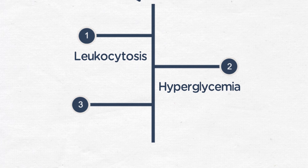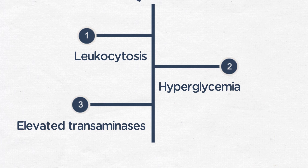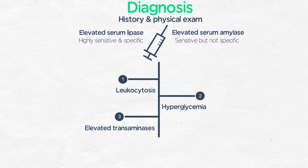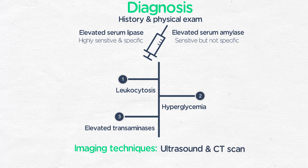Hypocalcemia may also occur. Particularly in the presence of gallstones, elevated transaminases — i.e., ALT or AST — may be present, as well as elevated bilirubin. Imaging used to assess for pancreatitis includes ultrasound, which has the benefit of no radiation, as well as CT scan, which can provide the most detail on pancreatitis and associated complications.